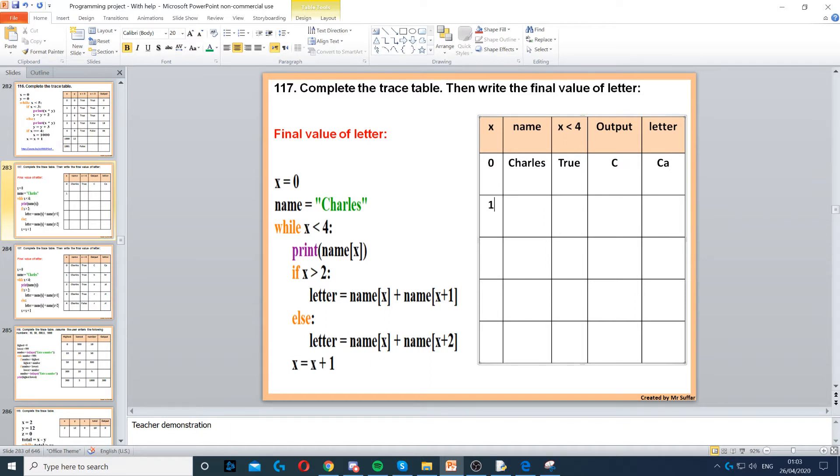Name stays as Charles, doesn't change. 1 is less than 4, that's true. Then it says print name X, so the next letter on position 1 is H. And then we've got if X is greater than 2, that's false. So we do name, letter is equal to name X, which is H, plus name X plus 2. X plus 2, that's...